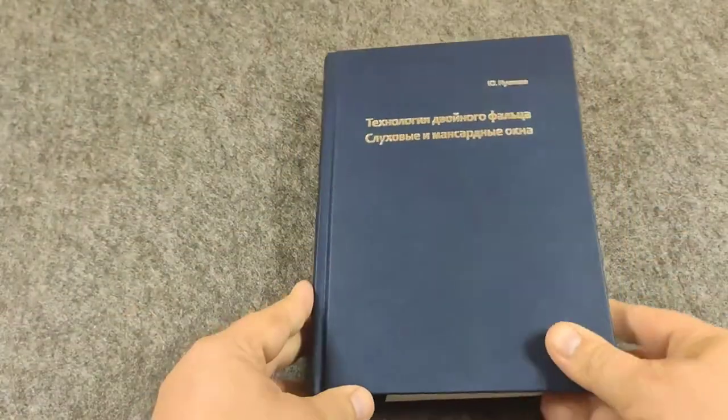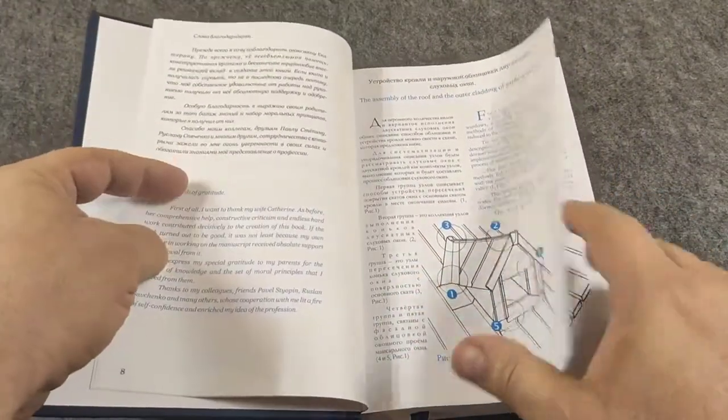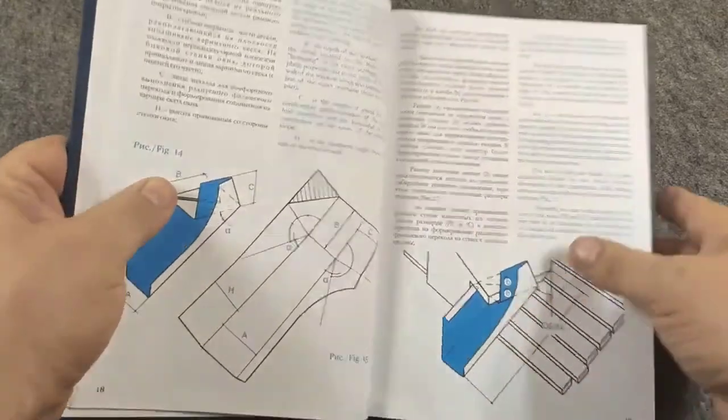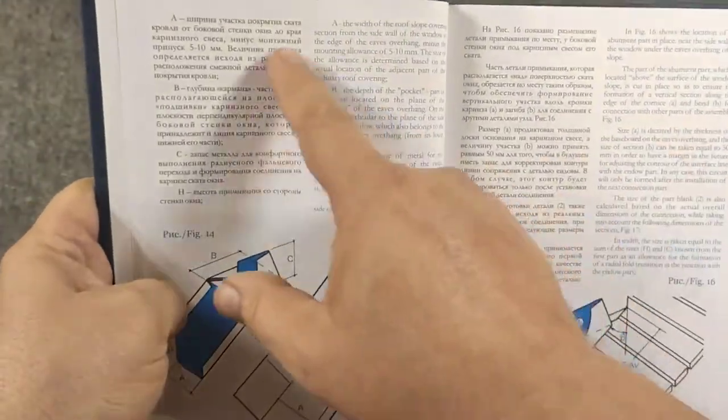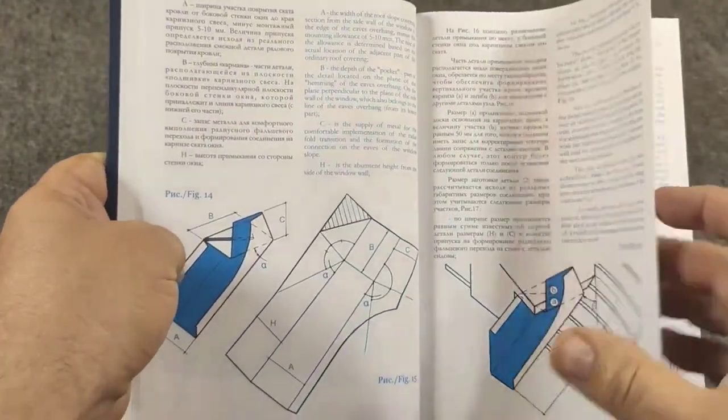The book is intended for roofers who specialize in covering metal roofs using Double Seam Technology as an aid. Number of pages: 670. Language: Russian and English.